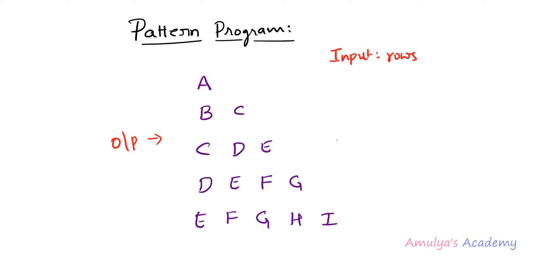Next step is we need to print this pattern. This is an alphabetic pattern. We have different types of patterns like star pattern or number pattern. If you are printing an alphabet pattern or number pattern, you should be careful about two things: one is the shape of the pattern, and the other is what we need to print in the different rows and columns. In the star pattern we only need to be careful about the shape, but in number and alphabet patterns we need to be careful about both the shape and what to print in each row and column.